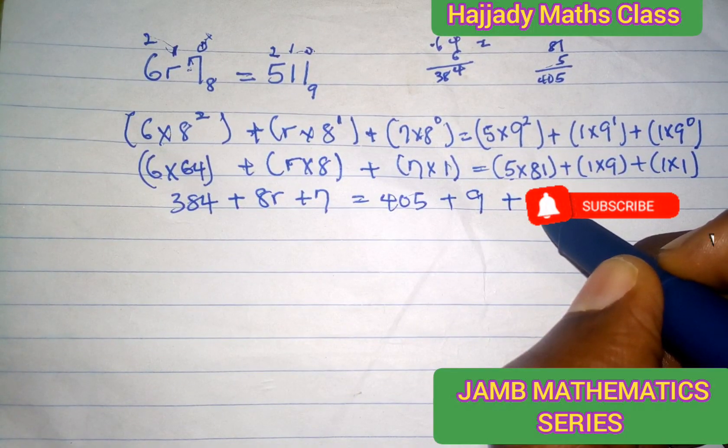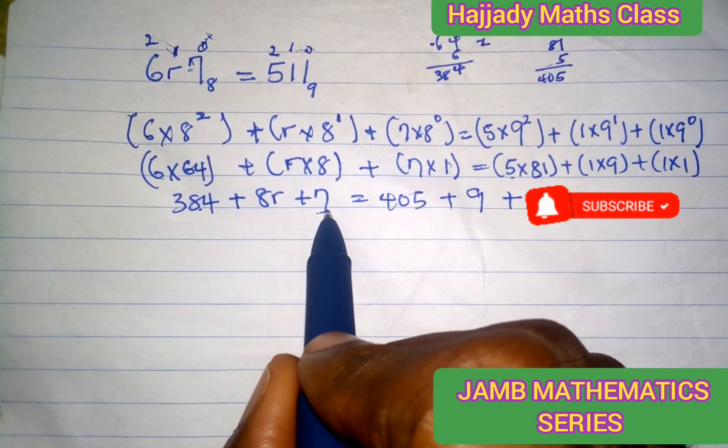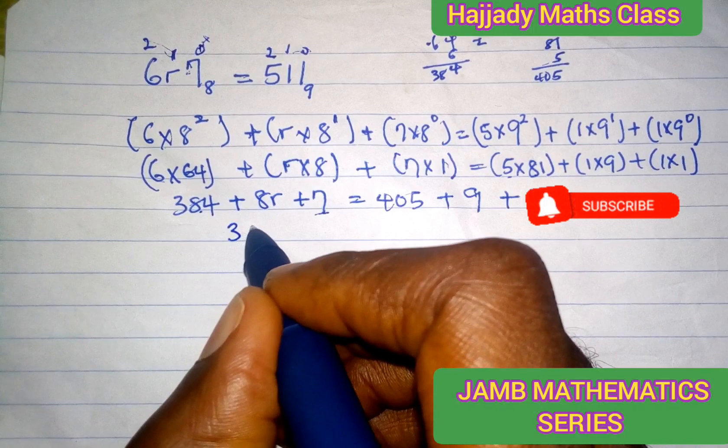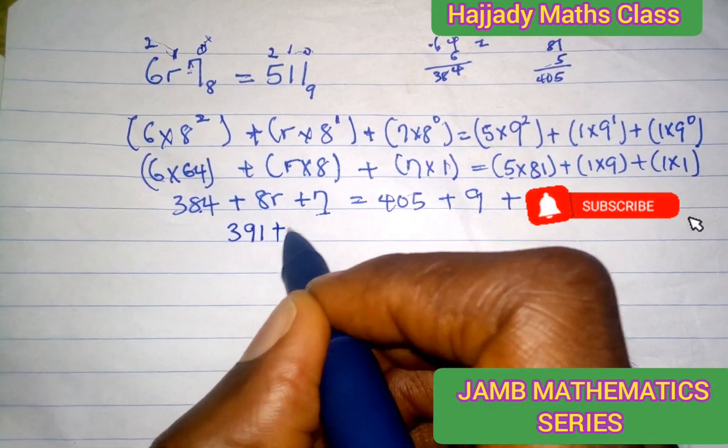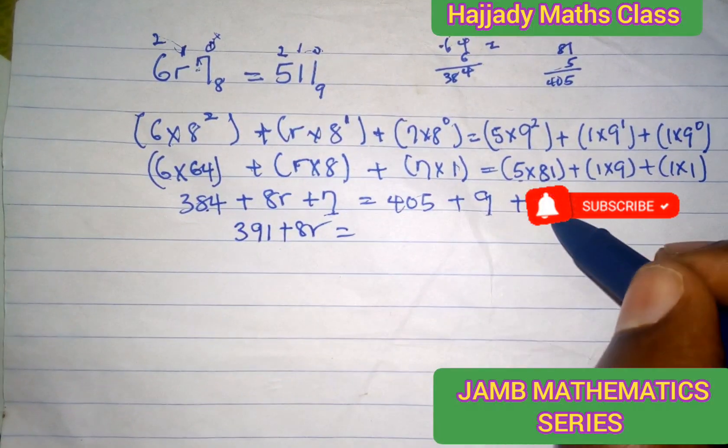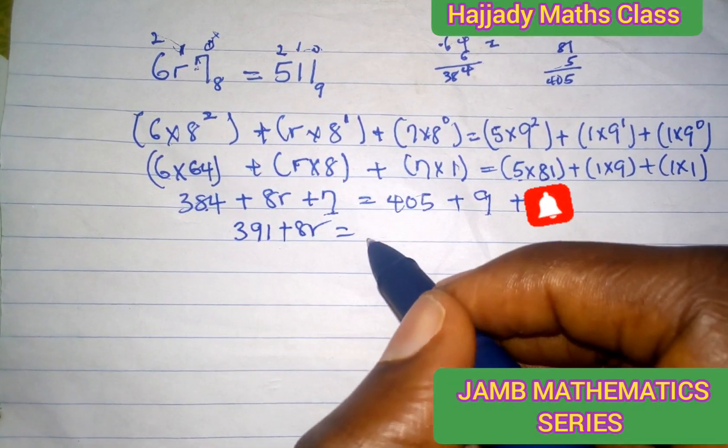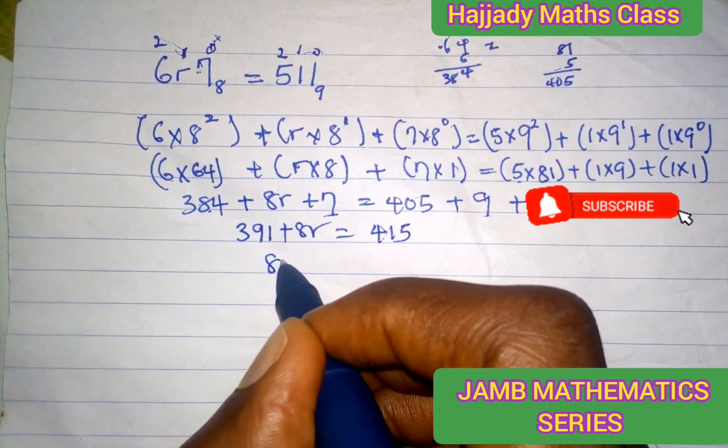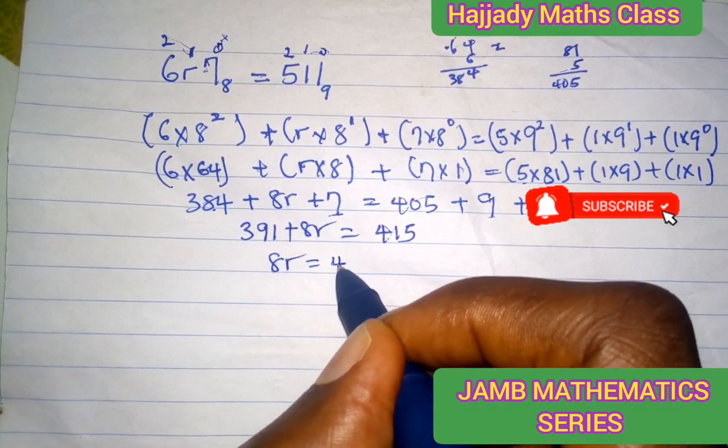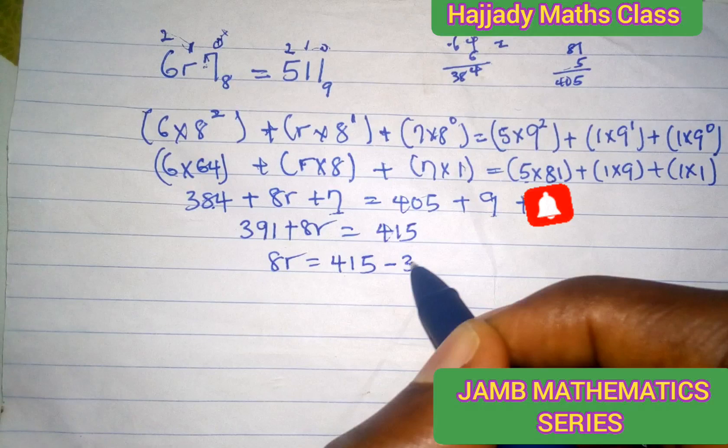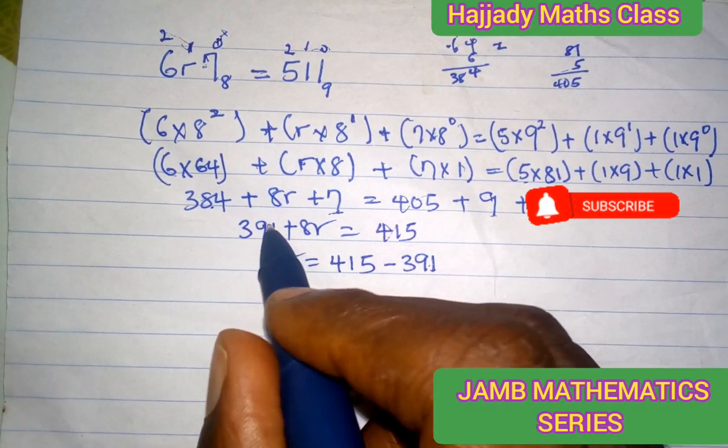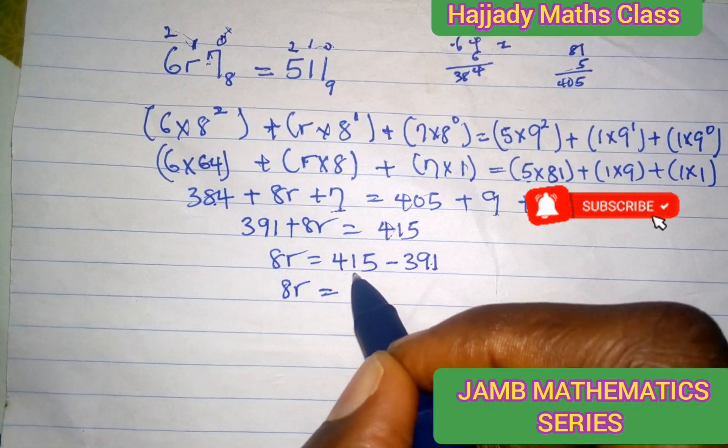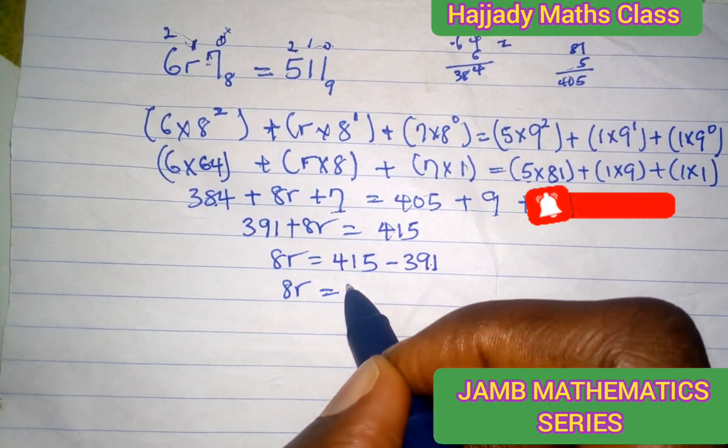So in doing this, 384 plus 7 gives us 391 plus 8R equals 9 plus 1 is 10, plus 405, it gives 415. So 8R equals 415 minus 391. We have 8R equals 415 minus 391 gives 24.